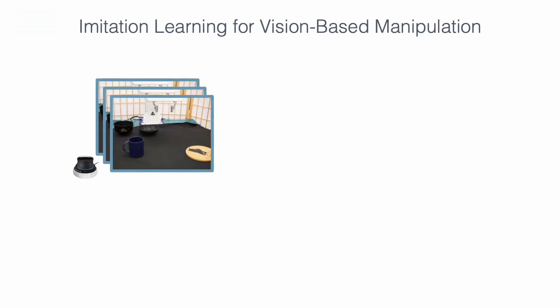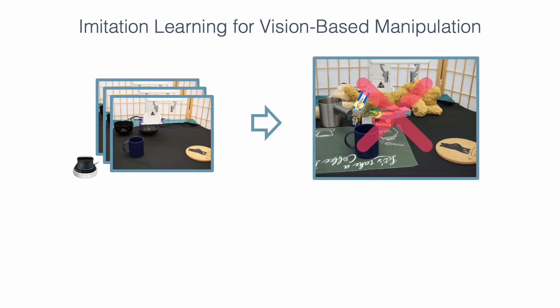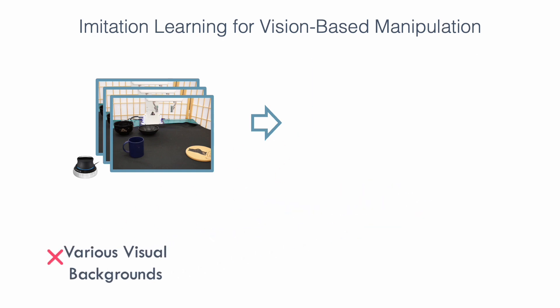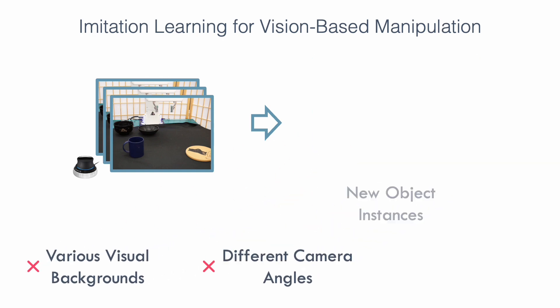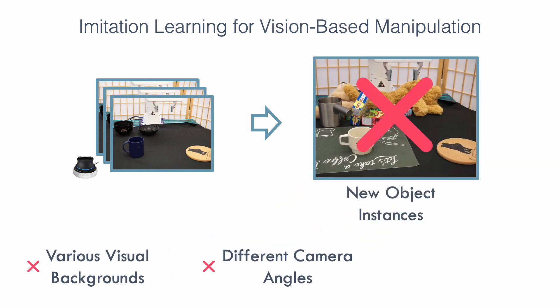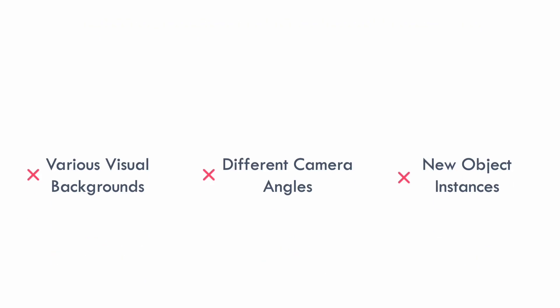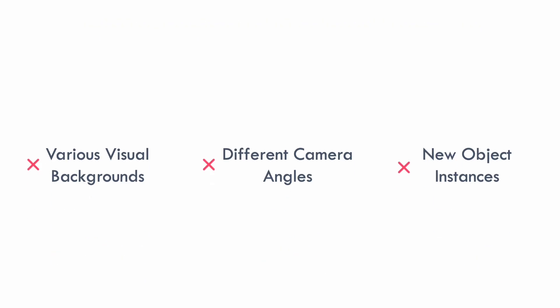While imitation learning can learn vision-based manipulation in a data efficient way, the policy will fail in seeing areas where it has never seen during training — for example, various backgrounds, different camera angles, or previously unseen new objects. What's the point of data efficiency of imitation learning if you need to recollect data all over again every time?